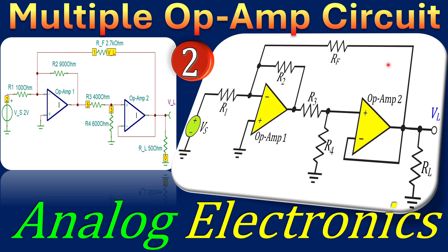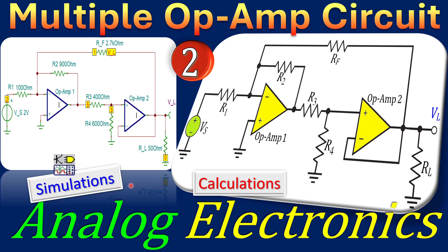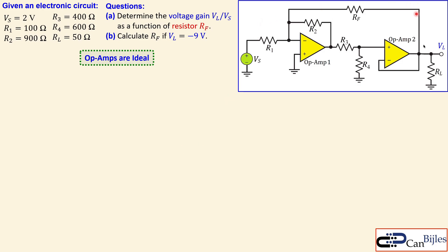Greetings and welcome to a new video about analog electronics. We continue with the multiple op-amp circuits — this will be our second example. We will see two op-amps and a DC voltage source. We will work out everything step by step and verify in SPICE simulations. The circuit has two op-amps, a DC voltage source Vs of 2 volts, and several resistors R1, R2, R3, R4, plus a load resistor.